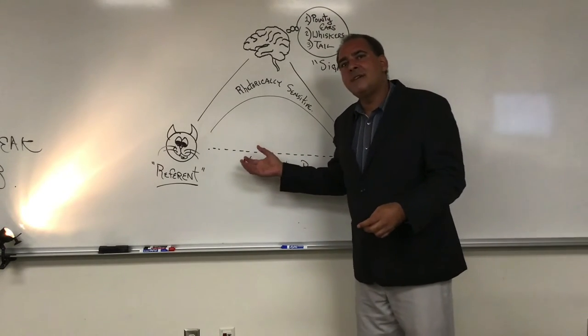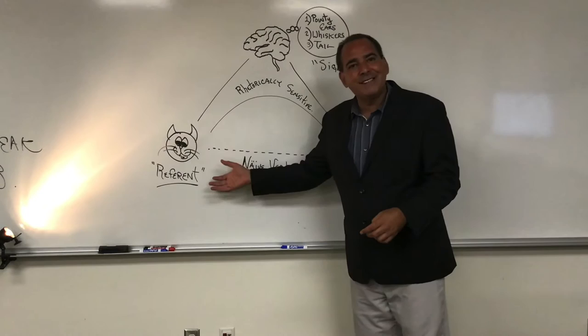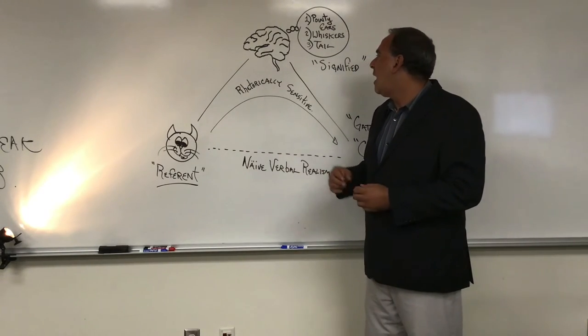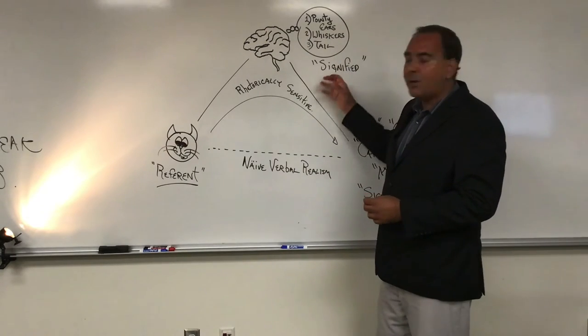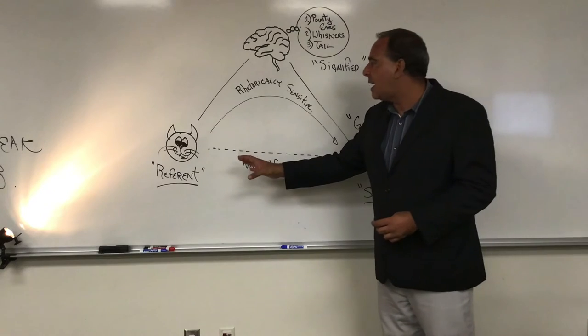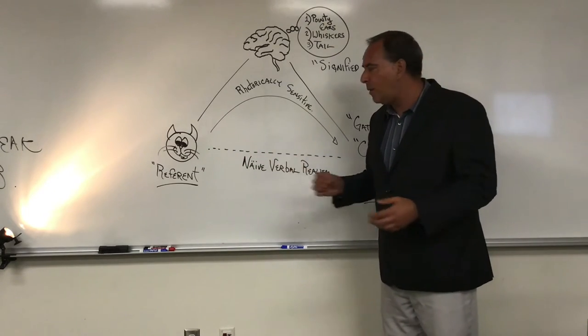Not all cats have tails, but if a cat has a tail, odds are it's going to be more cat-like than something else that's out there. And this process of signification, or how we signify the term to the referent that's actually out there, is much more complicated than we would normally think about.